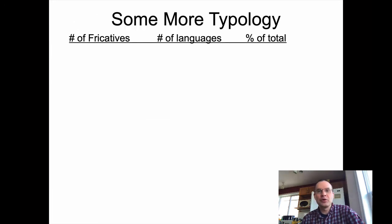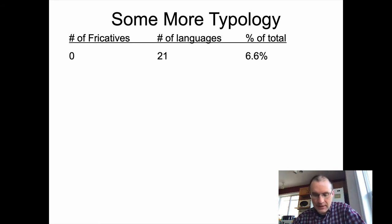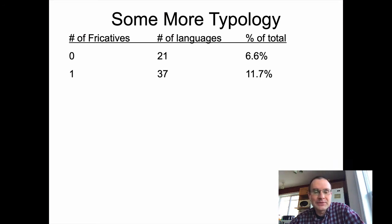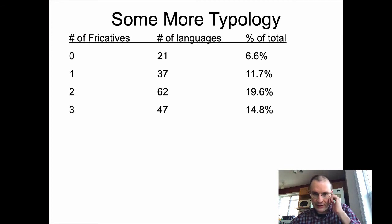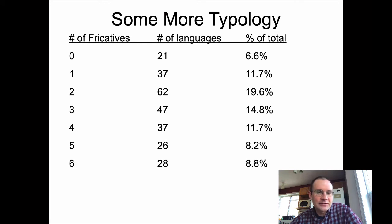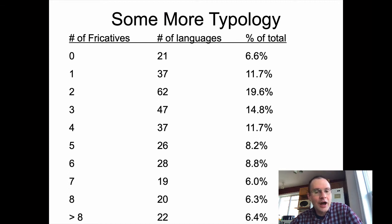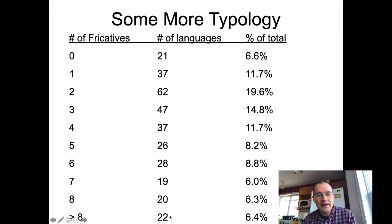So here are some more typological facts from the UPSID database. There are 21 languages that have no fricatives — about 6% of the total. There are 37 languages that have one fricative, and 62 have two, which is kind of the modal number for this distribution. After two fricatives, the number of languages drops off. English actually has more than eight fricatives, which is not common in the world's languages — only 22 languages out of 316, about 6%, have that many.